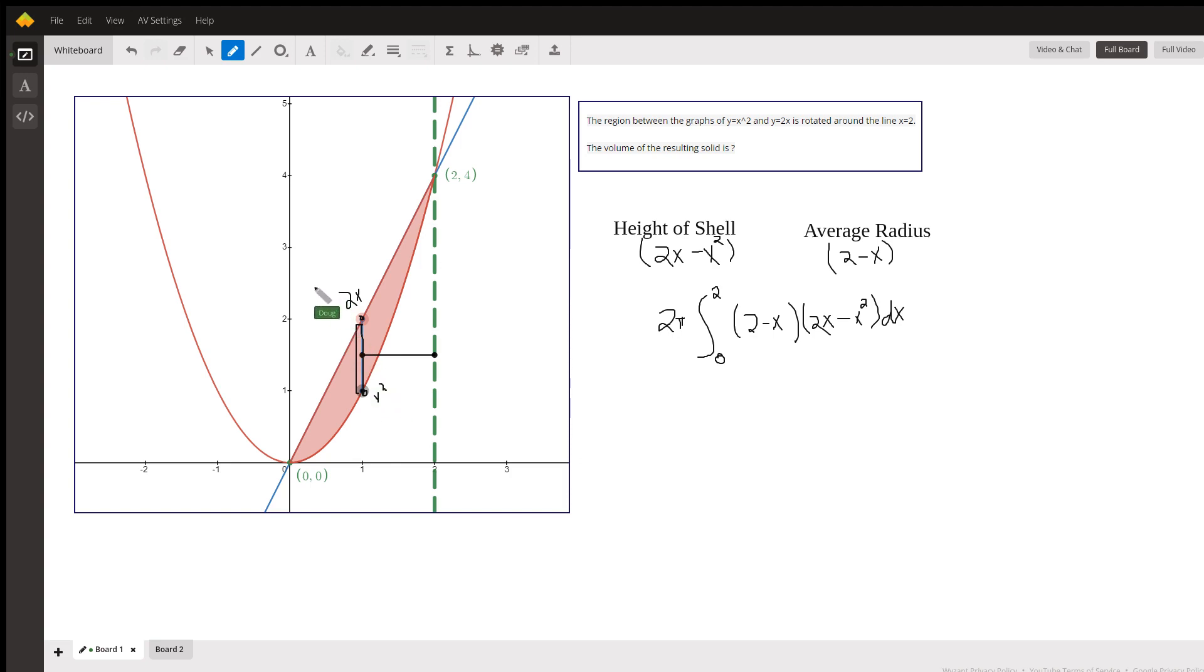And this is for every x between 0 and 2. And of course the reason that that works is because this distance right here is x squared. So 2x take away x squared leaves the height of the shell.